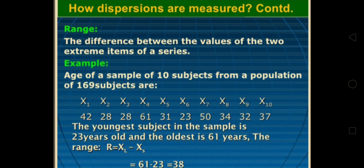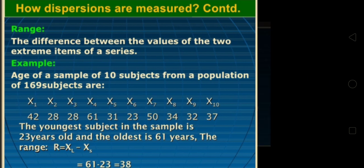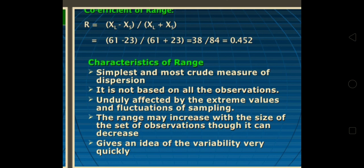Range is very common and can be applied to each and every one. Coefficient of range: highest minus lowest divided by highest plus lowest. 61 minus 23 divided by 61 plus 23, that is 38 divided by 84, equals 0.45452, which will be the coefficient.